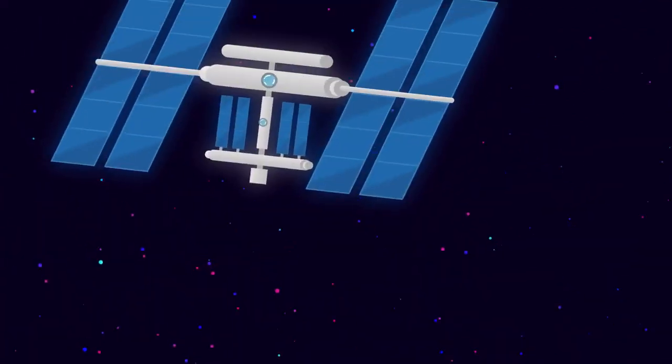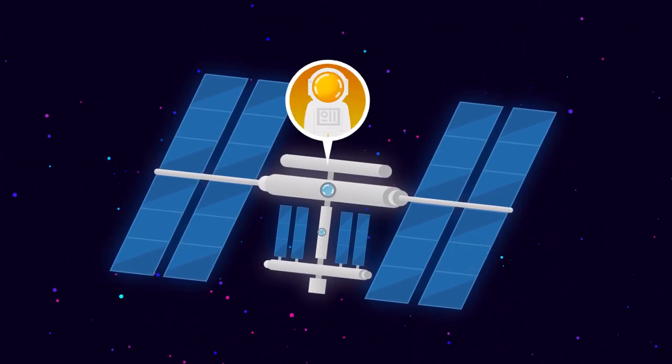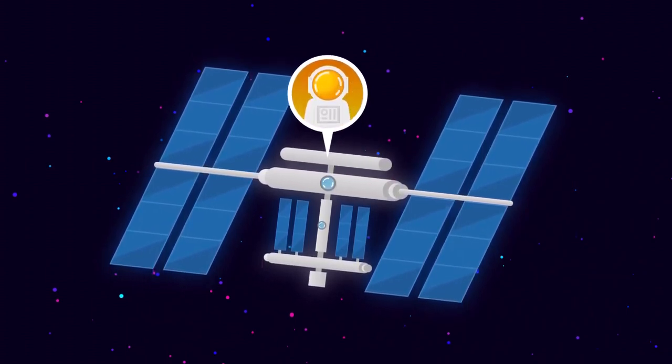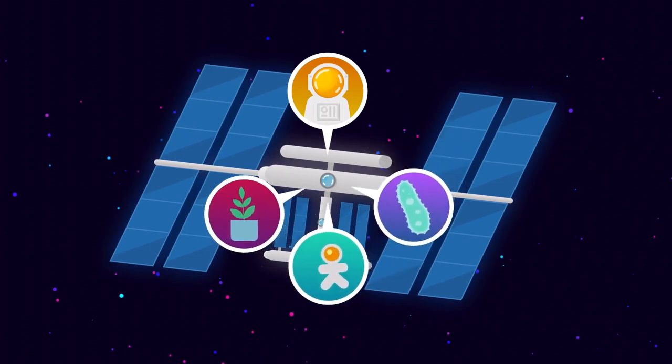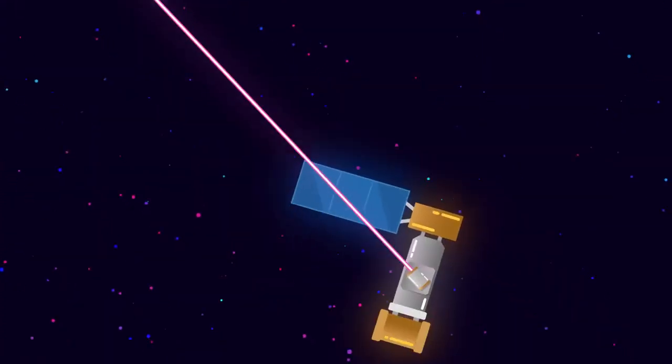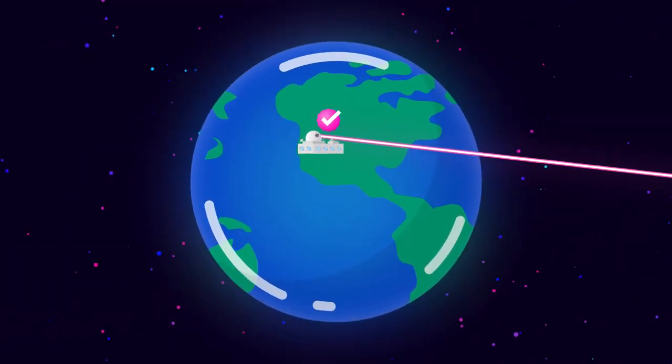LCRD's first orbiting experimental user will be the International Space Station. Astronauts live and work there, conducting research about life in space, microgravity, biology, and more. Using lasers, the station will be able to relay more experimental data to scientists on Earth.